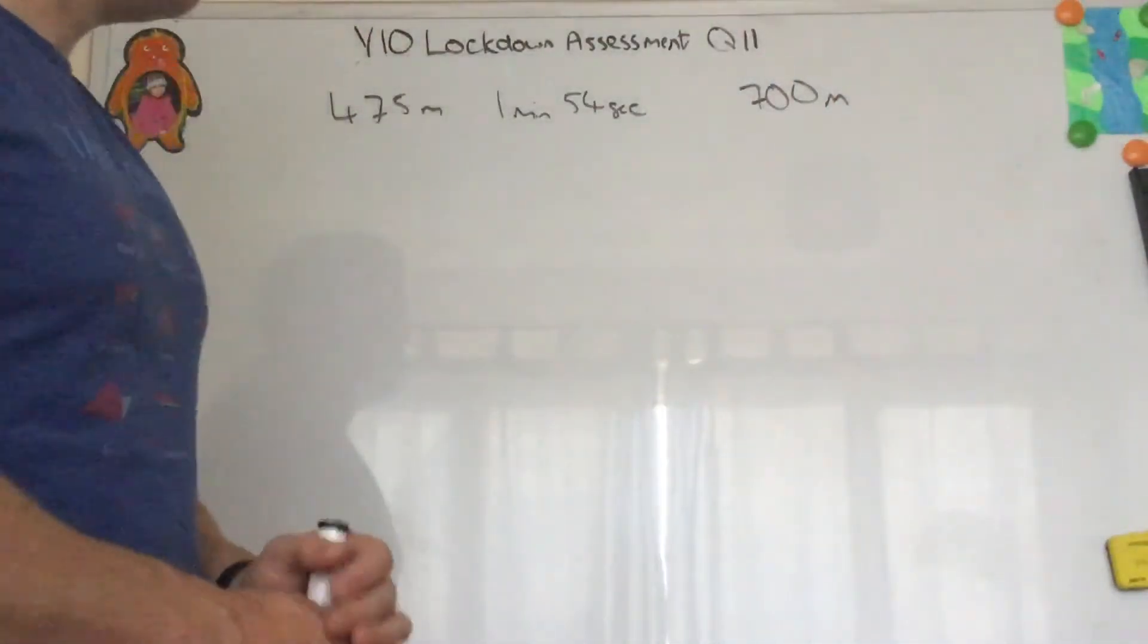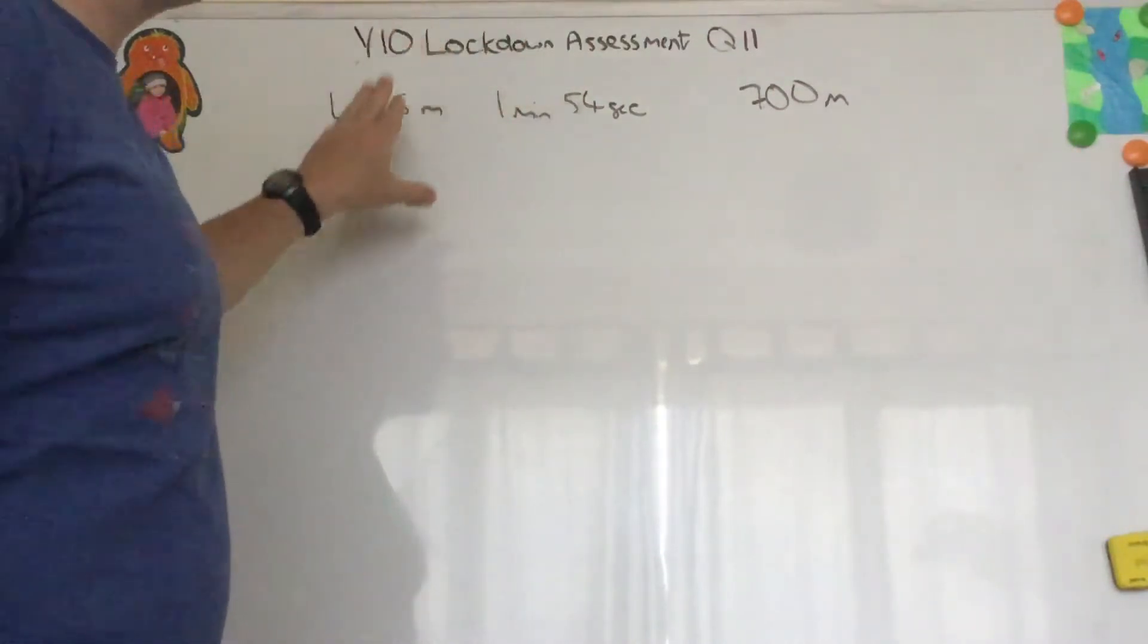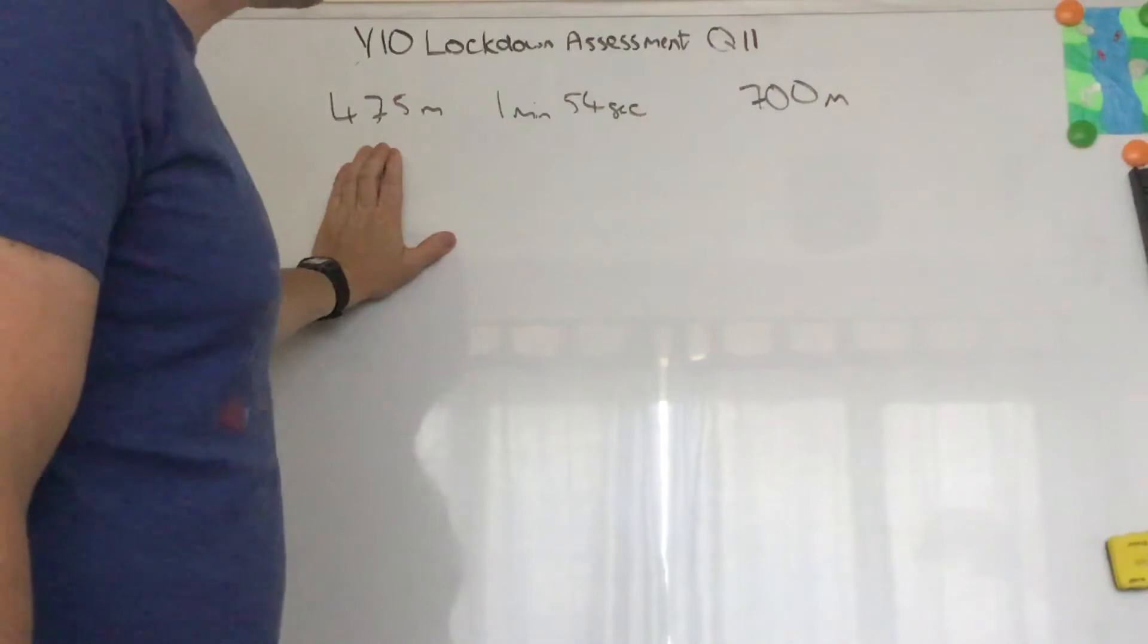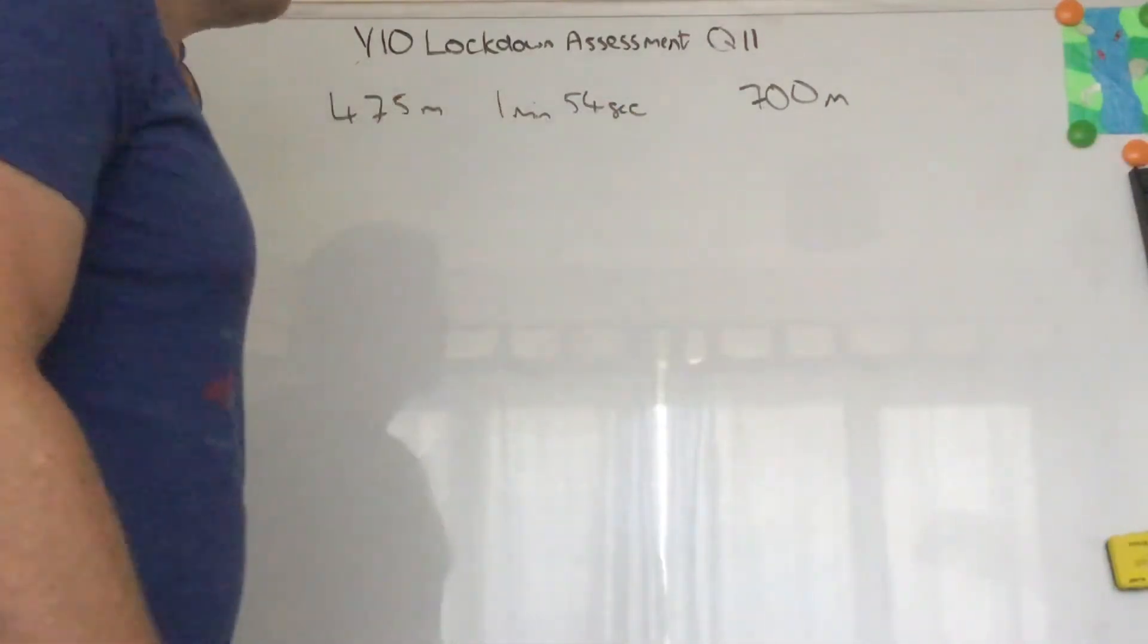Okay, question 11. Lara is a skier. She completes her ski race in 1 minute 54 seconds and it's 475 meters long. We assume that she has the average speed for each race. How long will it take her to do 700 meters?